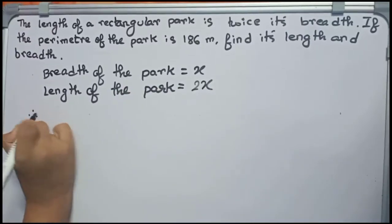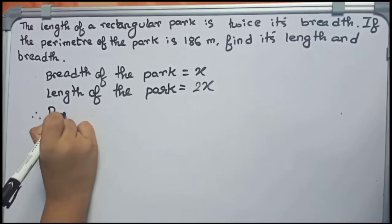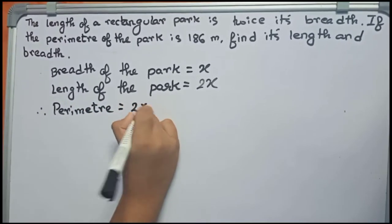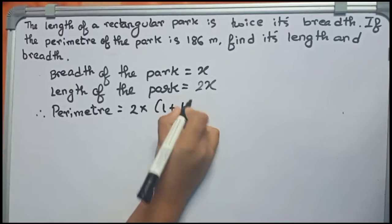Now we use the formula of perimeter. The formula is 2 into length plus breadth.